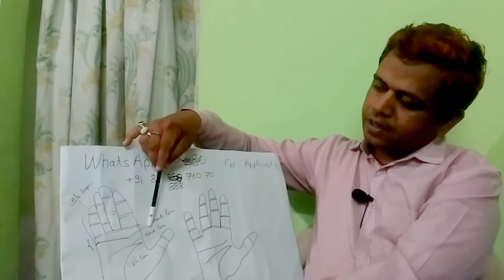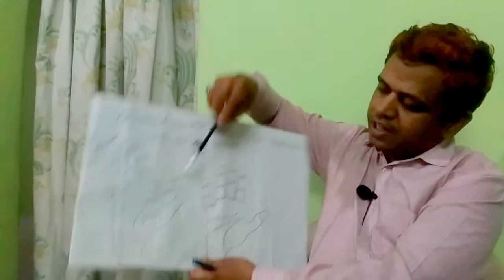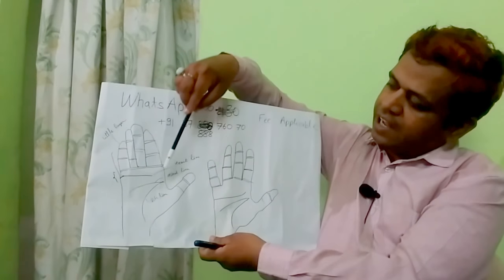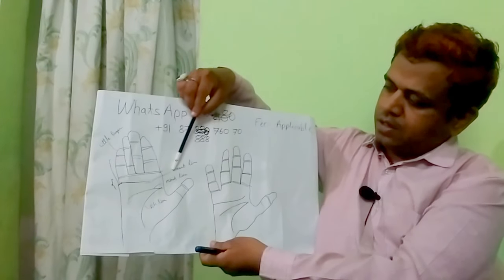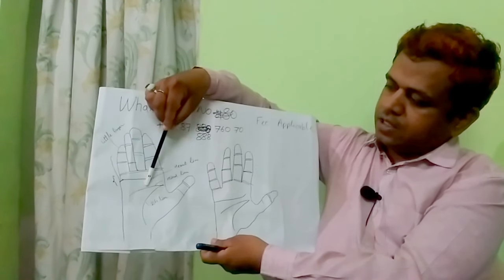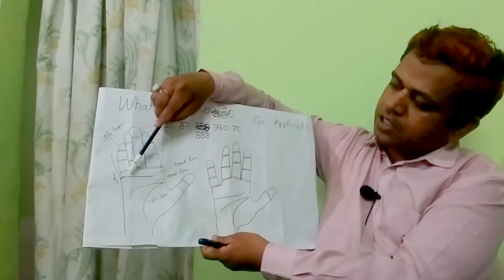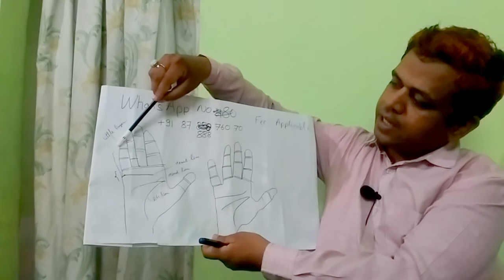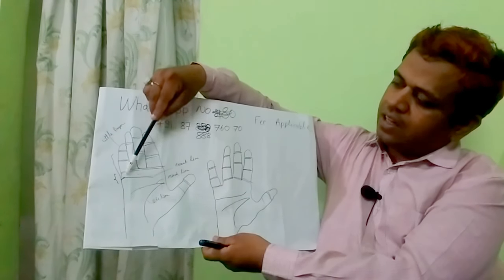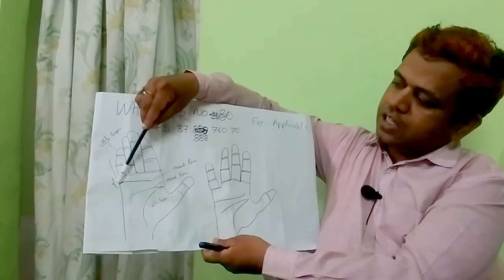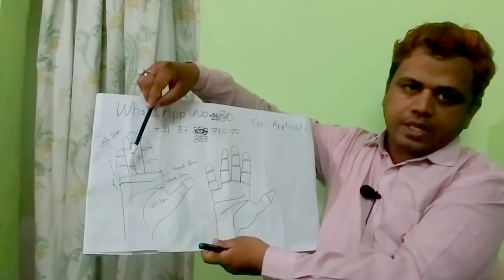This is the life line, this is the mind line, and this is the heart line. We will consider the area below the little finger and near the heart line. We will see this area — our focus is only on this area.